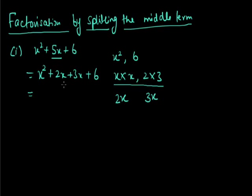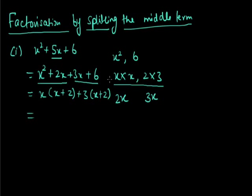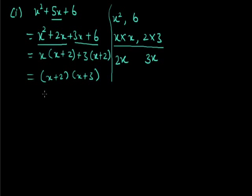Now from the first two terms we take x common, giving x(x + 2), and from the last two terms we take 3 common, giving 3(x + 2). Now among these two terms we take (x + 2) as common, leaving (x + 3). So the factorization of x² + 5x + 6 is (x + 2)(x + 3). This completes the factorization by splitting the middle term.